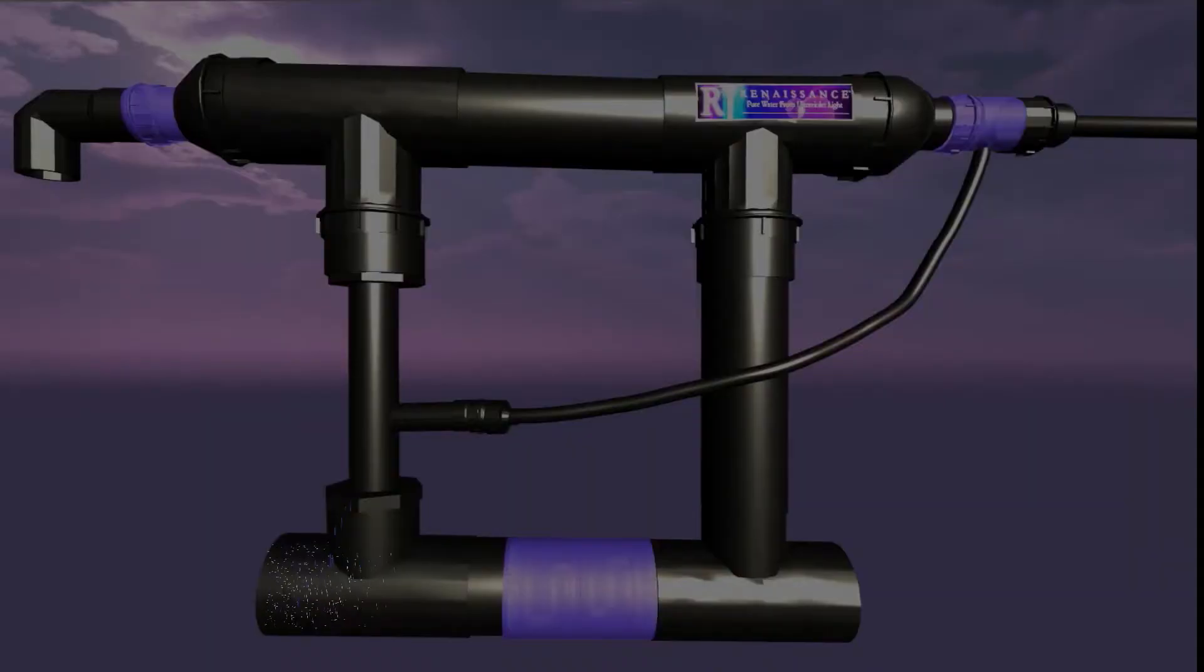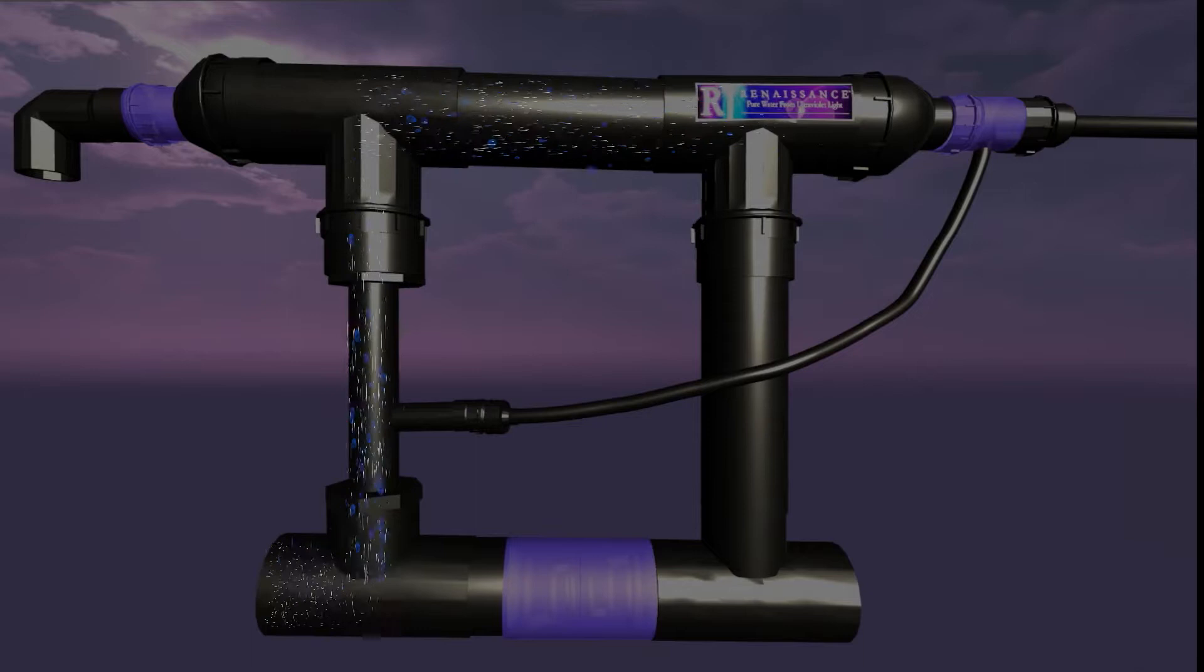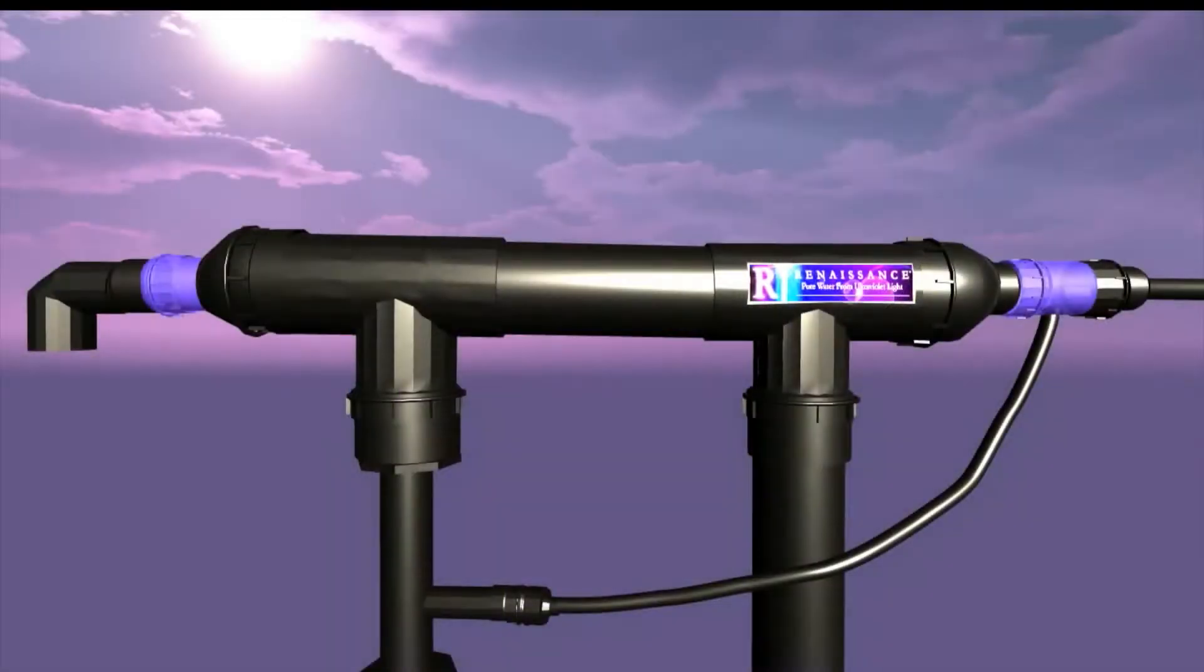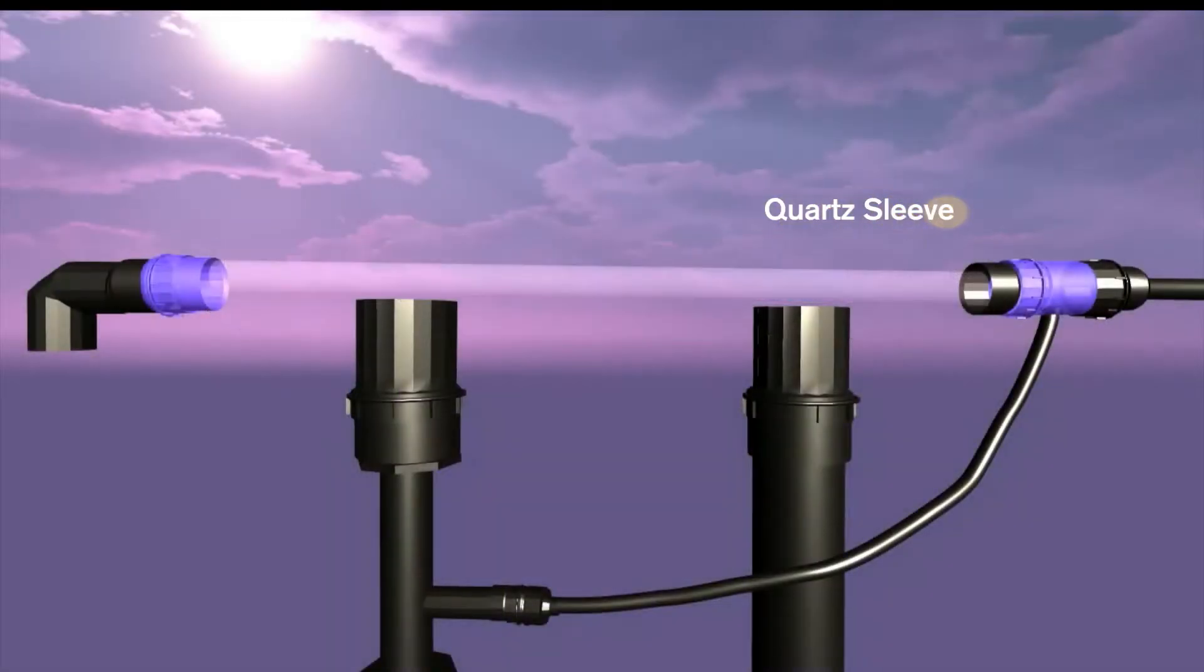How does it work? Water from your pump and filter enter the unit and travel upwards towards the top chamber, the location of the quartz sleeve and the ultraviolet light.